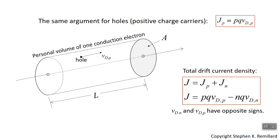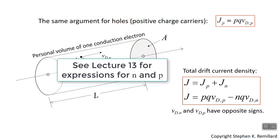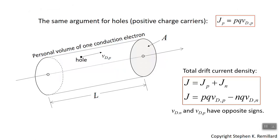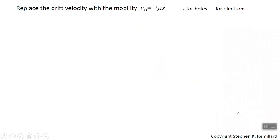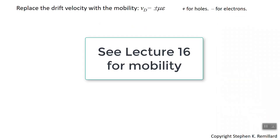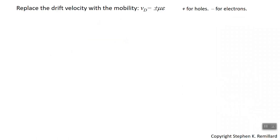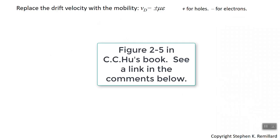This is the current density in terms of drift velocity. Drift velocity is not the most useful quantity — we need to find a way to infer it using another physical quantity called mobility. Drift velocity is related to electric field through a direct linear proportionality: drift velocity equals mobility times electric field, plus for holes and minus for electrons. Mobility can be found in reference materials; it depends on dopant concentration, and graphs are available in textbooks for various semiconducting materials.